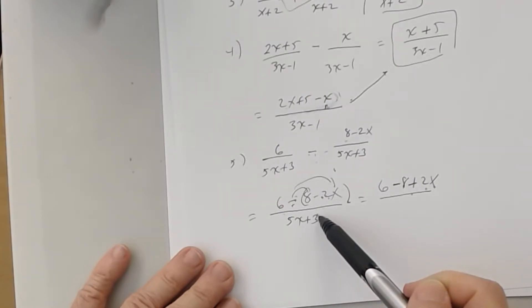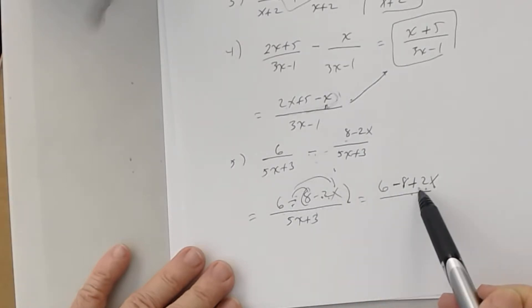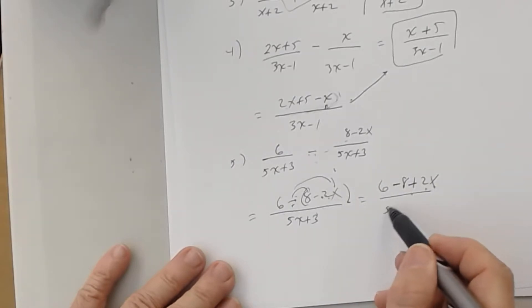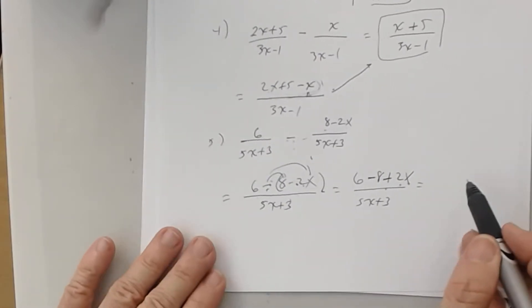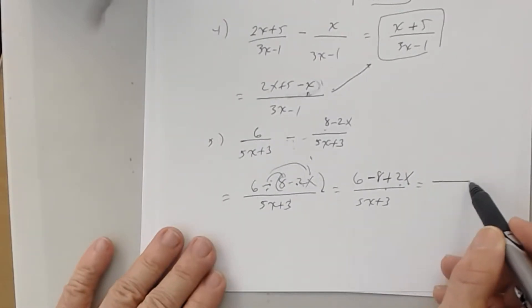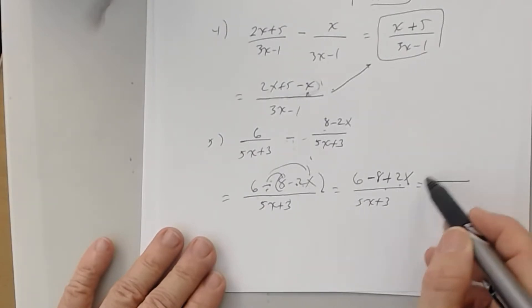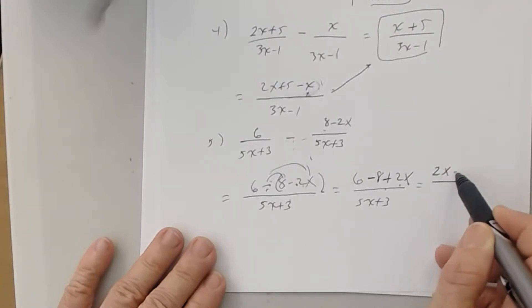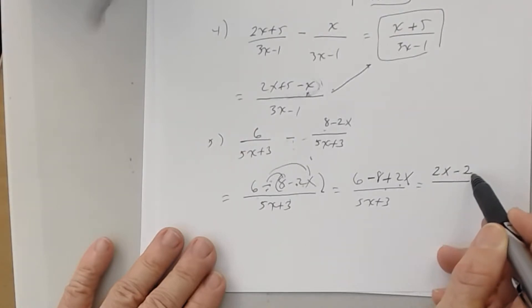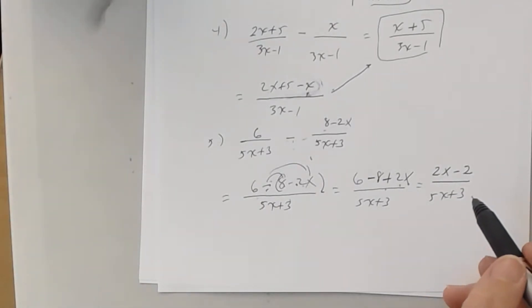You need parentheses, then distribute to get rid of them, giving 6 minus 8 plus 2x over 5x plus 3. Combine like terms in the numerator: you get 2x minus 2 divided by 5x plus 3.